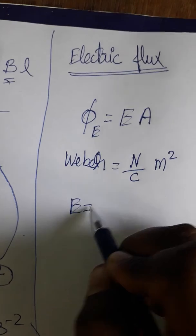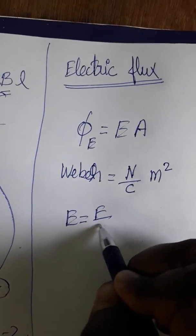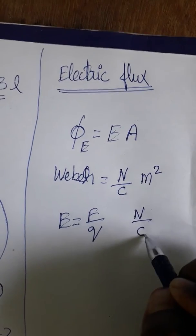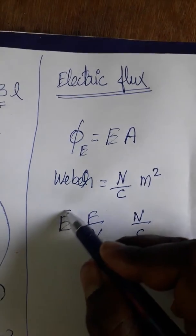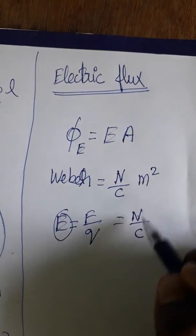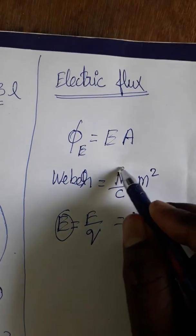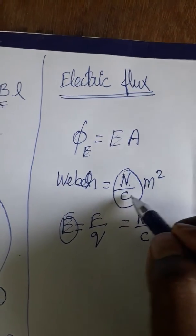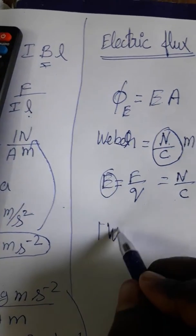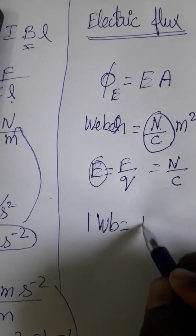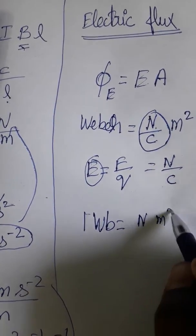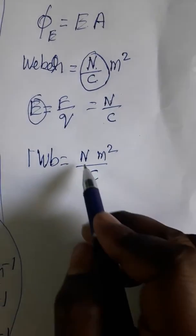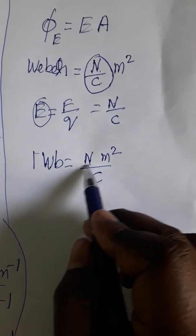Electric field is equal to force per unit charge. Force is in Newton and charge is in coulombs, so electric field is equal to Newton per coulombs. Therefore, one Weber is equal to one Newton meter square per coulombs.